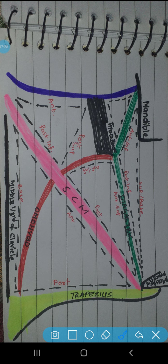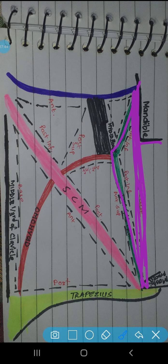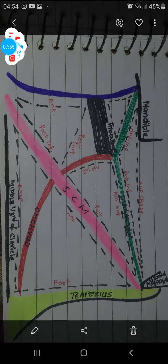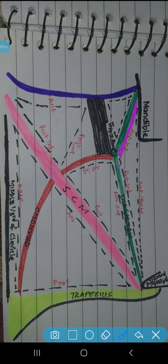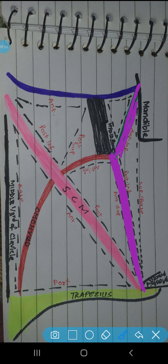Now we will see the digastric triangle, also called the submandibular triangle. The base is the mandible - the line joining the angle of the mandible with the mastoid process. The anterior inferior boundary is formed by the anterior belly of digastric, and the posterior inferior boundary is formed by the posterior belly of digastric.